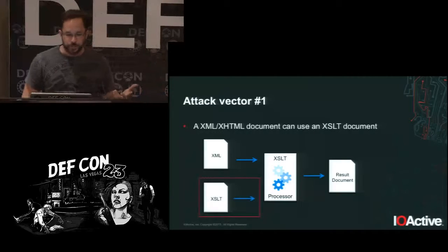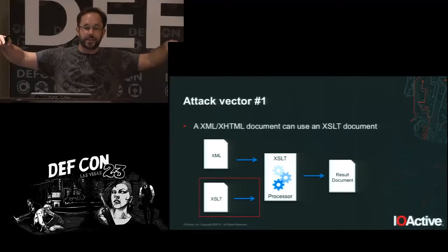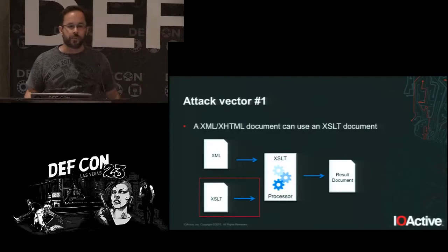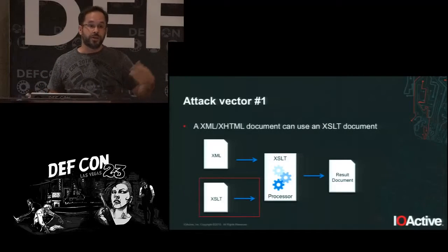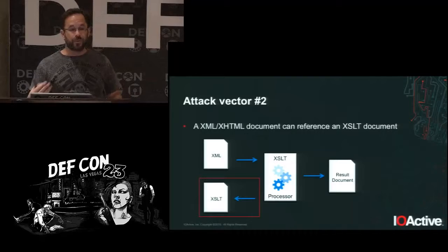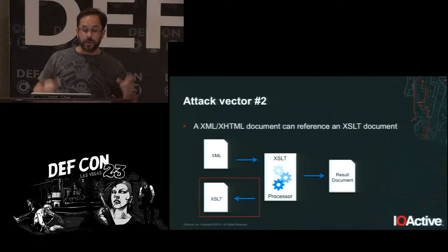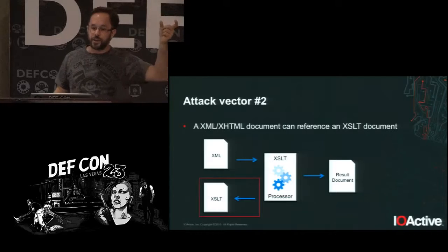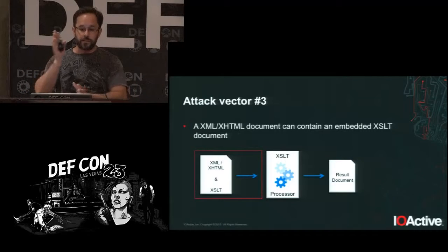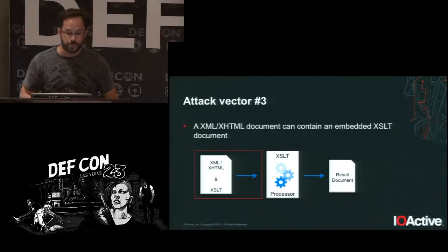There are three ways XSLT processing works. First, a processor can receive both an XML and an XSLT file via command line. Second, the XML can reference the XSLT document location for the processor to retrieve. Third, you can embed the XSLT document within the XML, supplying a single file to get the result document.